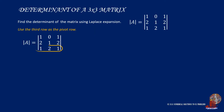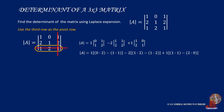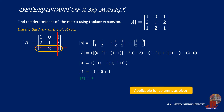Working with the third row, start with positive 1 times the remaining determinant. The second term has negative 2 times the determinant of 1, 1, 2, and 2. The third term is positive 1 times the determinant of the minor. Expanding gives 1 times the quantity of 0 times 2 minus 1 times 1, minus 2 times the quantity of 1 times 2 minus 1 times 2, plus 1 times the quantity of 1 times 1 minus 2 times 0. This simplifies as negative 1 minus 0 plus 1, confirming the determinant of matrix A is 0. Columns can also be used as the pivot in Laplace expansion.